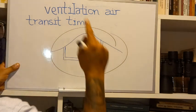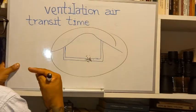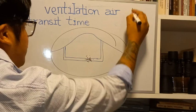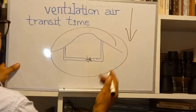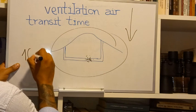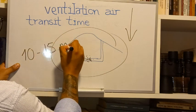So we need to reduce, we as ventilation engineers, we need to reduce ventilation air transit time. To what amount? To 10 to 15 minutes.